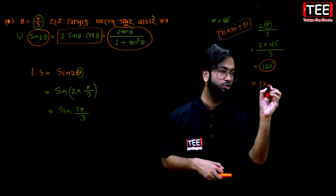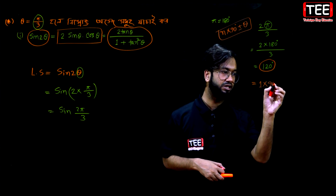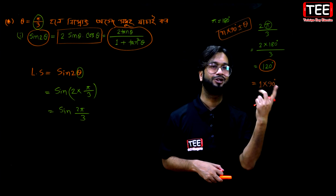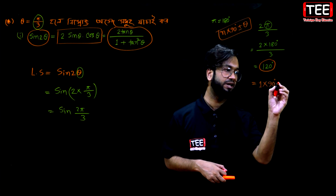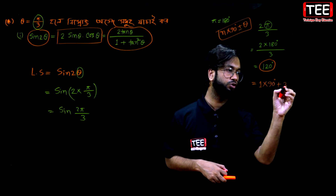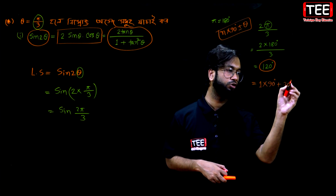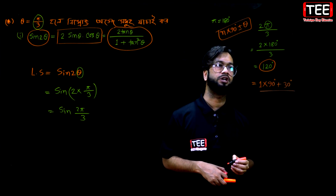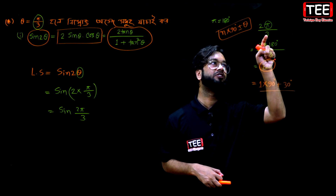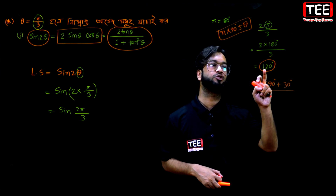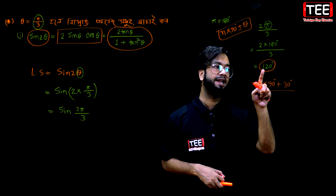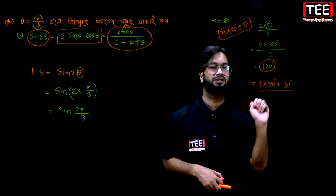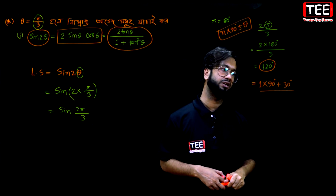1 into 90 degrees is 90, and plus 30 degrees is 30, so this is 120 degrees. 2π/3 is 120 degrees, and 120 degrees equals 1 into 90 degrees plus 30 degrees.